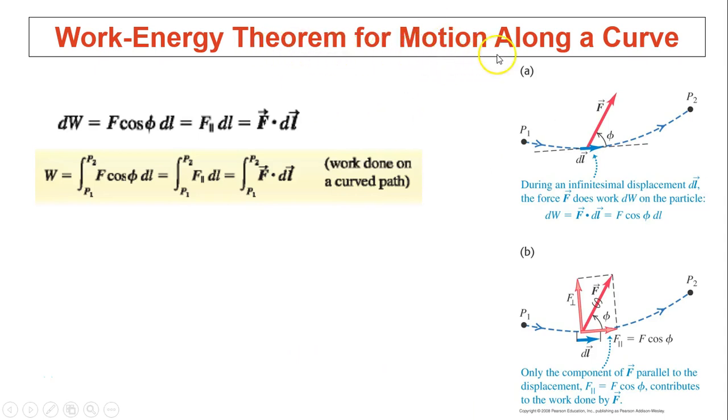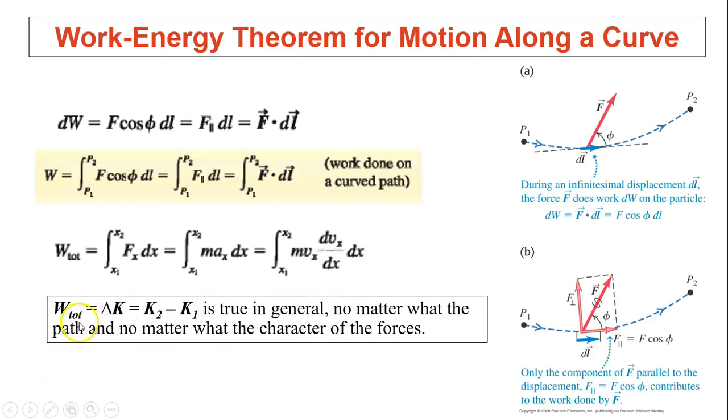Now work energy theorem for motion along a curved line. When you have a curved line, only the parallel force is doing the work. Perpendicular force is not doing the work. So the work done is the integral of parallel force, f dot dl. This is the force in the parallel direction. You will have the same conclusion, which is the total work done causes the changing kinetic energy. The total work done has to be the parallel force. No matter what path and no matter what character of force, that force moving in a curved path equals changing kinetic energy of the system.